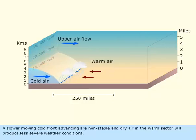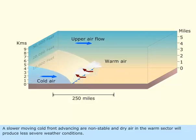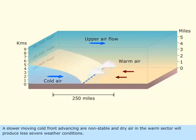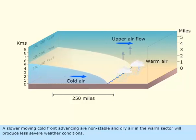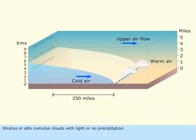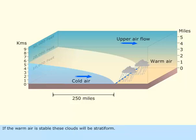A slower-moving cold front advancing through unstable and dry air in the warm sector will produce less severe weather conditions — stratus or altocumulus clouds with light or no precipitation. If the warm air is stable, these clouds will be stratiform. If the warm air is unstable, they are cumuliform, and possibly accompanied by thunderstorms.